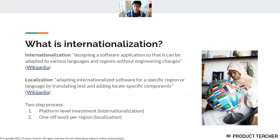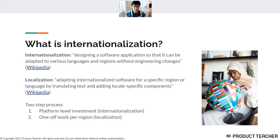Let's dive into the course content. What exactly is internationalization? Wikipedia defines it as designing a software application so that it can be adapted to various languages without engineering changes. That's actually the really key part of this definition — the "without engineering changes." Because if you did need to do all of these different engineering changes to adapt it to a given region or language, then that would just be called hard coding.